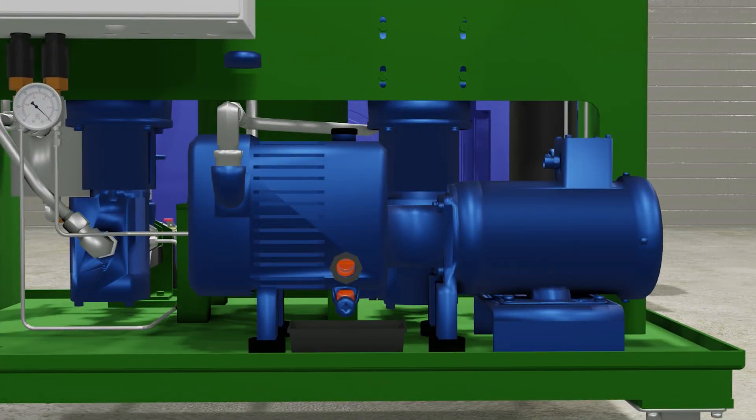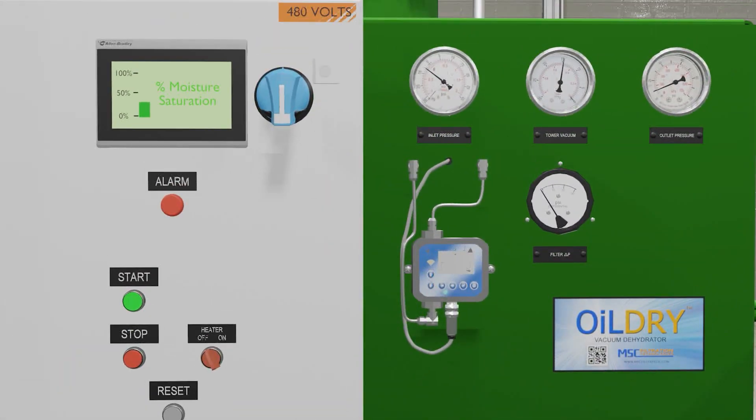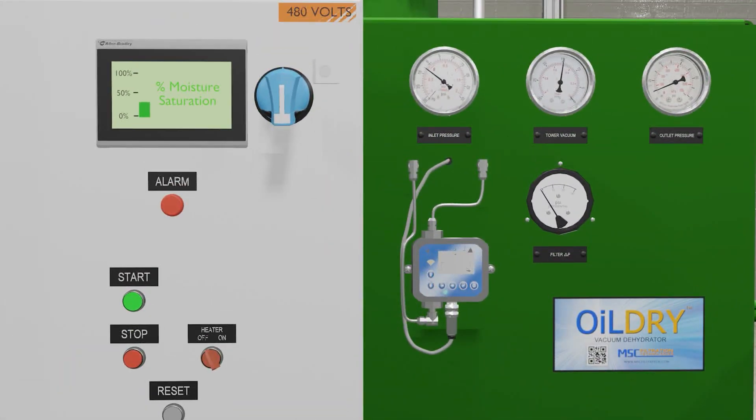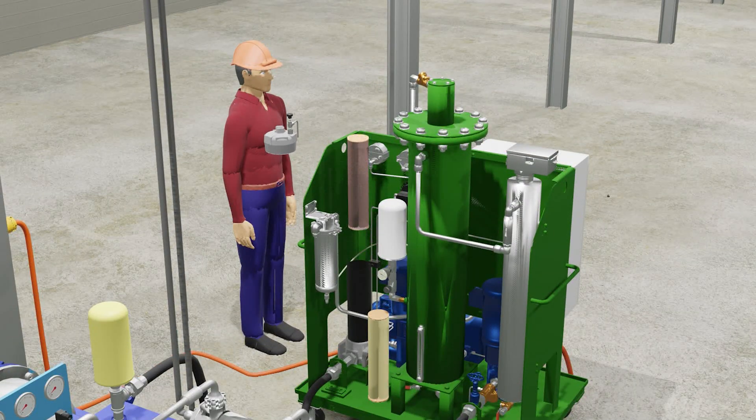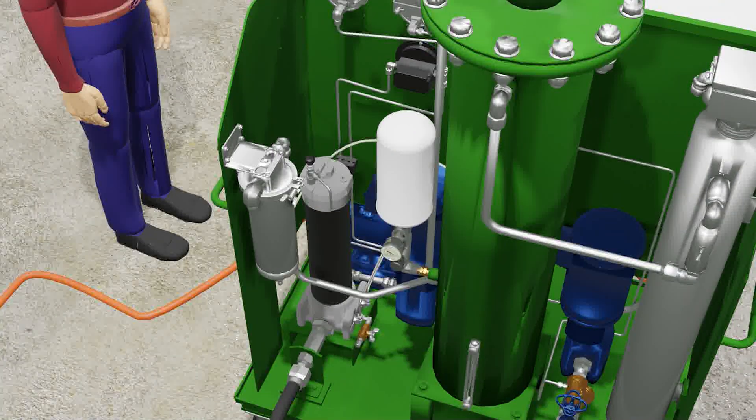Maintenance for the Oil Dry is simple. It only requires a vacuum pump gearbox oil change shown here once a year, indicated and alarmed by the Allen-Bradley PLC controller. The particulate filter change is as needed, signaled by the filter DP indicator gauge and the controller's alarm. Both tasks can be easily accomplished with an adjustable wrench and require minimal downtime.